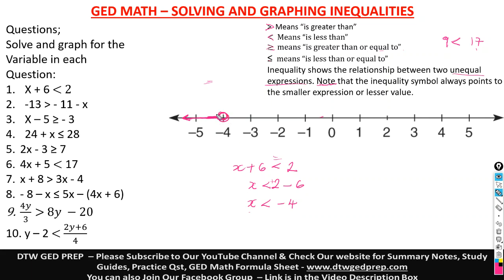Your circle would not be shaded — it would be empty. You circle right at negative 4, and your arrow, since your inequality sign goes to the left, your line goes to the left. So this is the solution and this is how it is graphed.